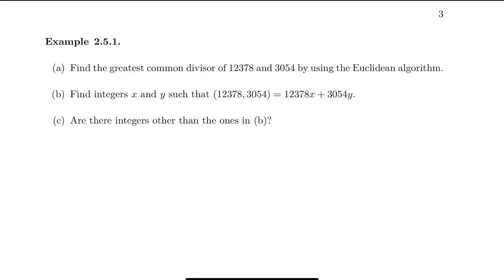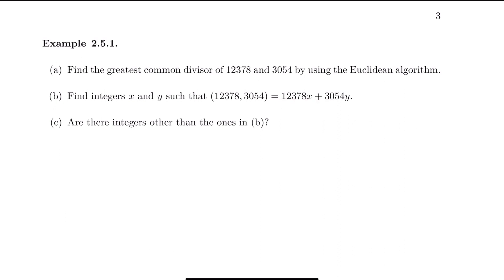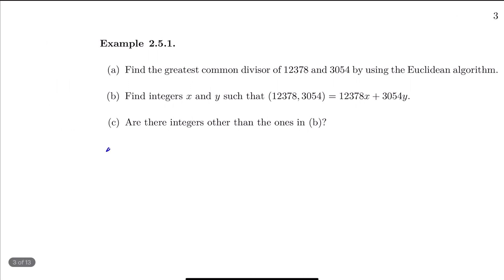Today we are going to use the Euclidean algorithm to find the greatest common divisor of 12,378 and 3,054. Then we will find integers X and Y such that the GCD equals 12,378 times X plus 3,054 times Y. And can we have other integers other than X and Y in part B? Now let's find the greatest common divisor starting from problem A.